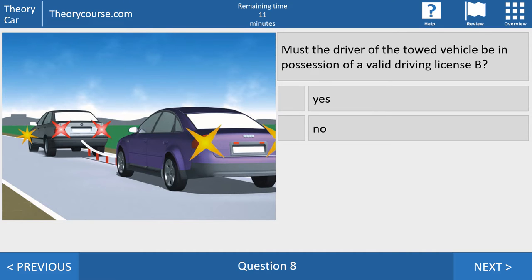Question eight. Must drivers of the third vehicle be in possession of a valid driving license B. Yes or no? Of course, you must have a valid driving license B. You cannot ask your nephew of 14 years old to help you. The one who is in the third vehicle also must have a valid driving license B.